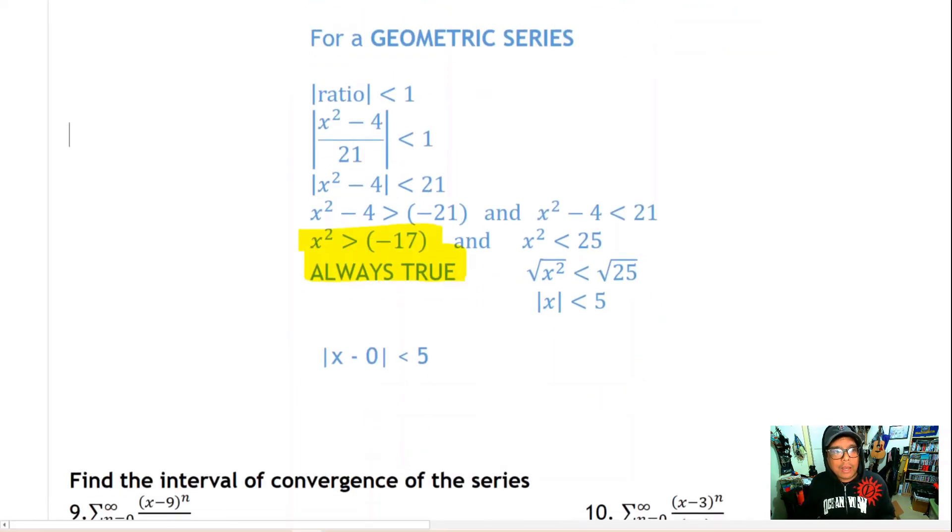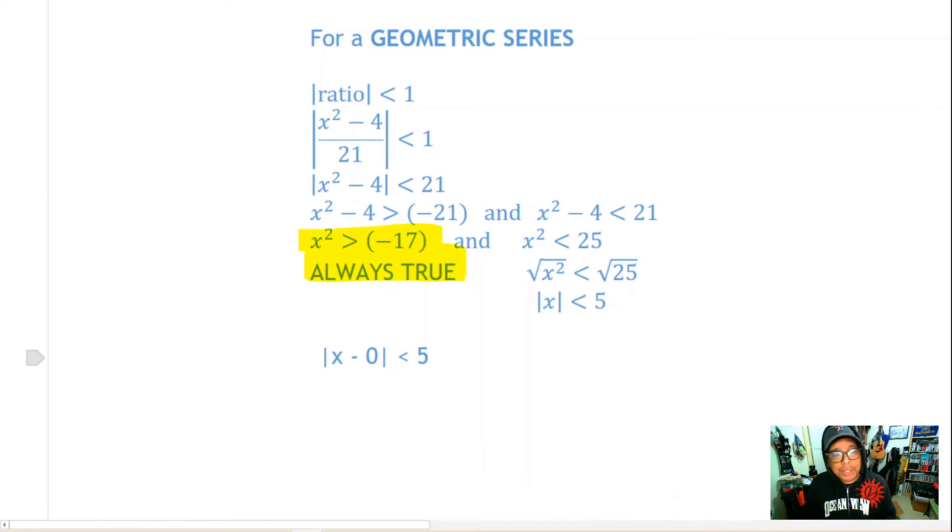So the absolute value of x minus 0 needs to be less than 5. We'll compare that to |x - center| is less than the radius. We can see that the center is 0 and the radius is 5.